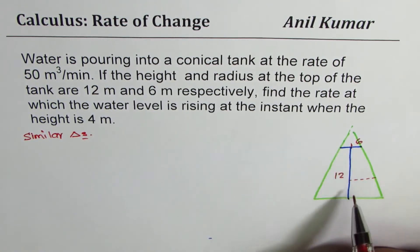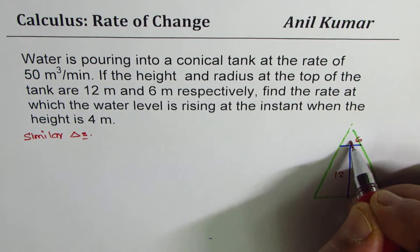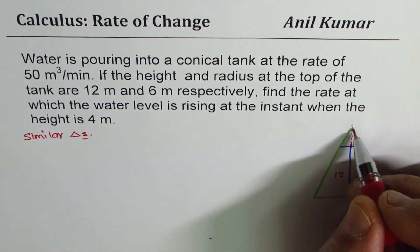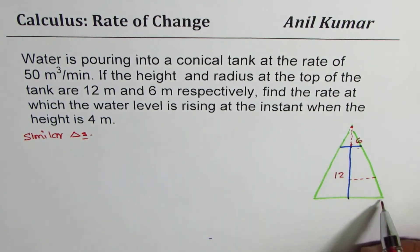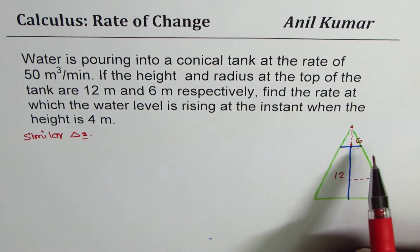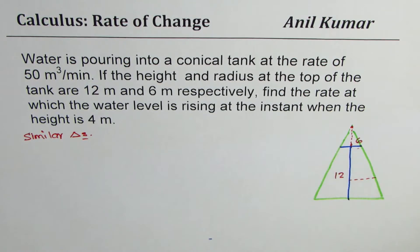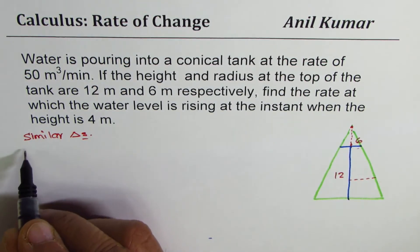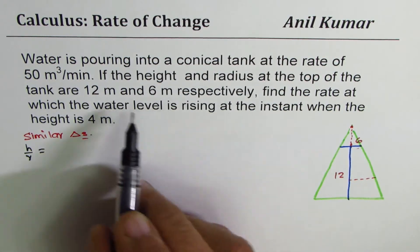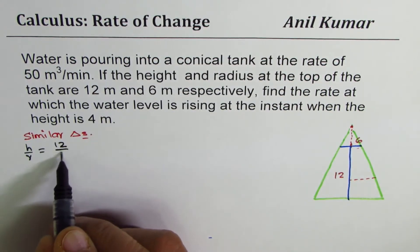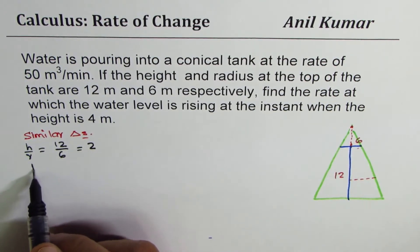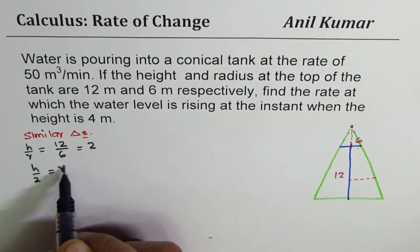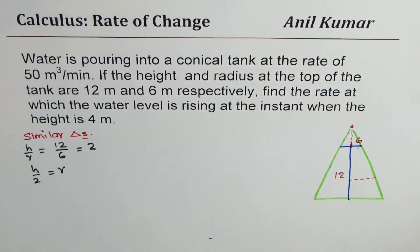Now as you can see in this particular example, you can consider a triangle. Somewhere there will be a corner. So all these triangles which are formed here are all similar. So that gives you a relation between height and the radius. From the given condition, we know that height over radius is 12 over 6, that is 2. So we can write height divided by 2 is radius r. So that links height with the radius.